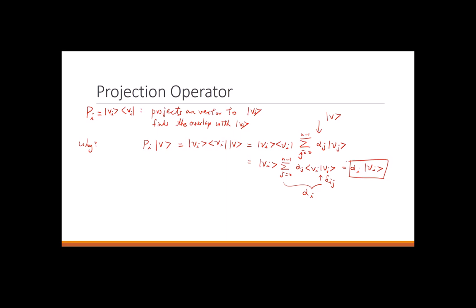Let's look at an example — that may be easier. For example, we have alpha_j with j from zero to N minus one. When I equals J, it is one; otherwise they are all zero. So the only surviving term is alpha_I.